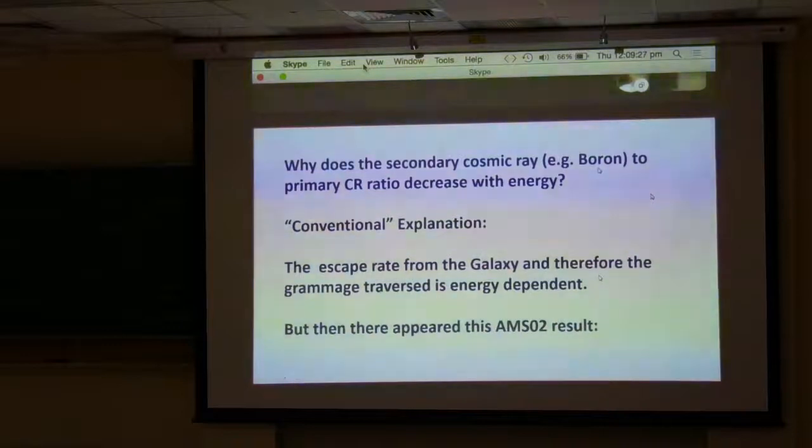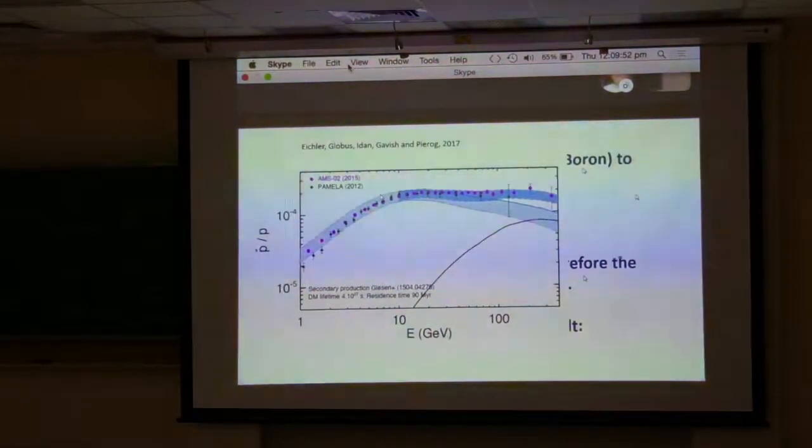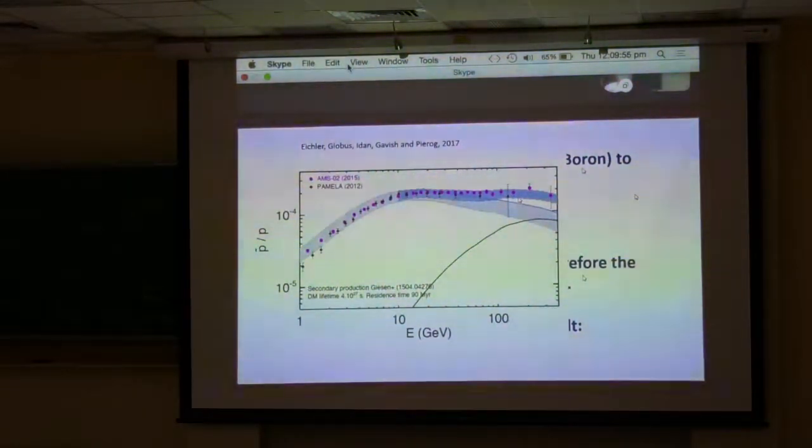But then there appeared this AMS02 result that the expected boron to carbon ratio, the expected antiproton ratio should decrease between 10 and 100 GeV, but it's observed not to decrease. Antiprotons are also the result of cosmic ray collisions. And why doesn't it decrease?